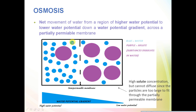Next up is osmosis. You can think of osmosis as the diffusion of water, but it's not exactly the same as the previous example. Definition-wise, it's the net movement of water from a region of higher water potential to lower water potential, down a water potential gradient and across a partially permeable membrane. Don't get confused by the term water potential — it just means a high concentration of water. Because we don't really associate water with concentration, we use the term water potential. So high water potential just means there's a lot of water, and low water potential means there isn't a lot of water. A partially permeable membrane is just a membrane that only lets some particles through, not all.